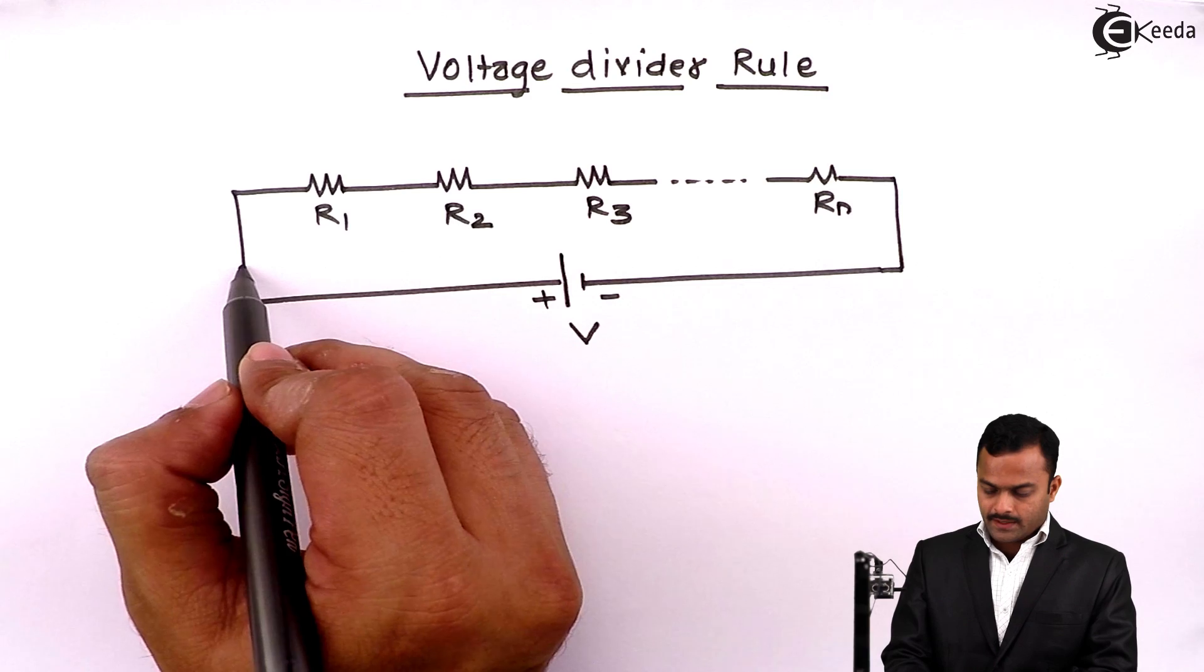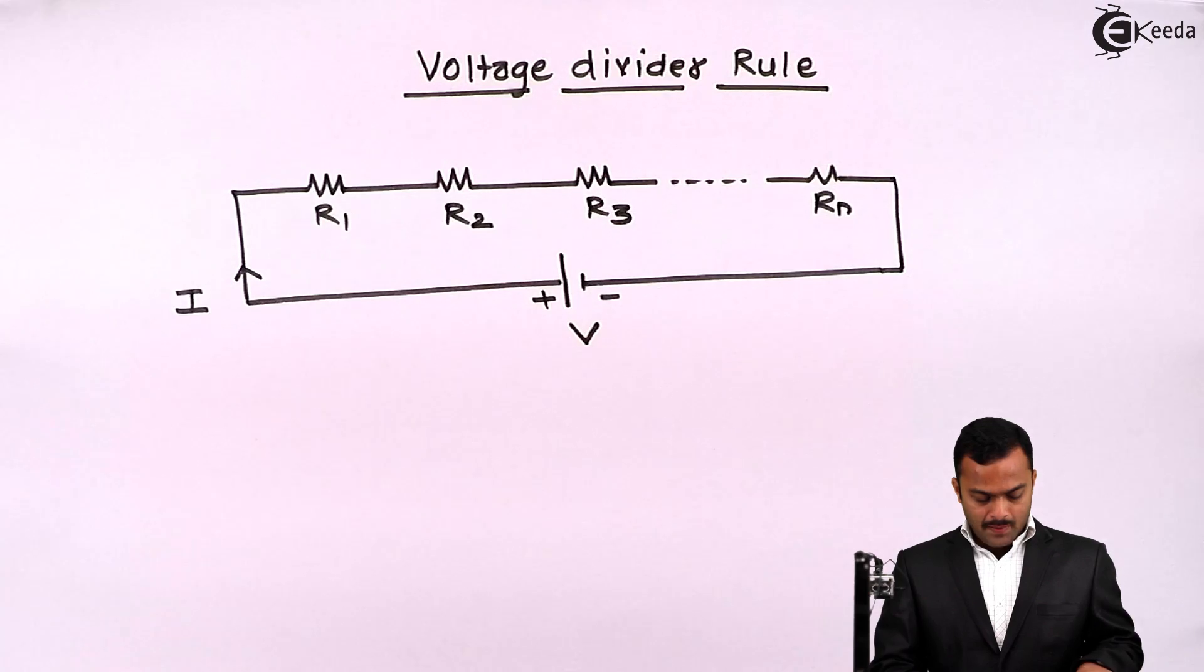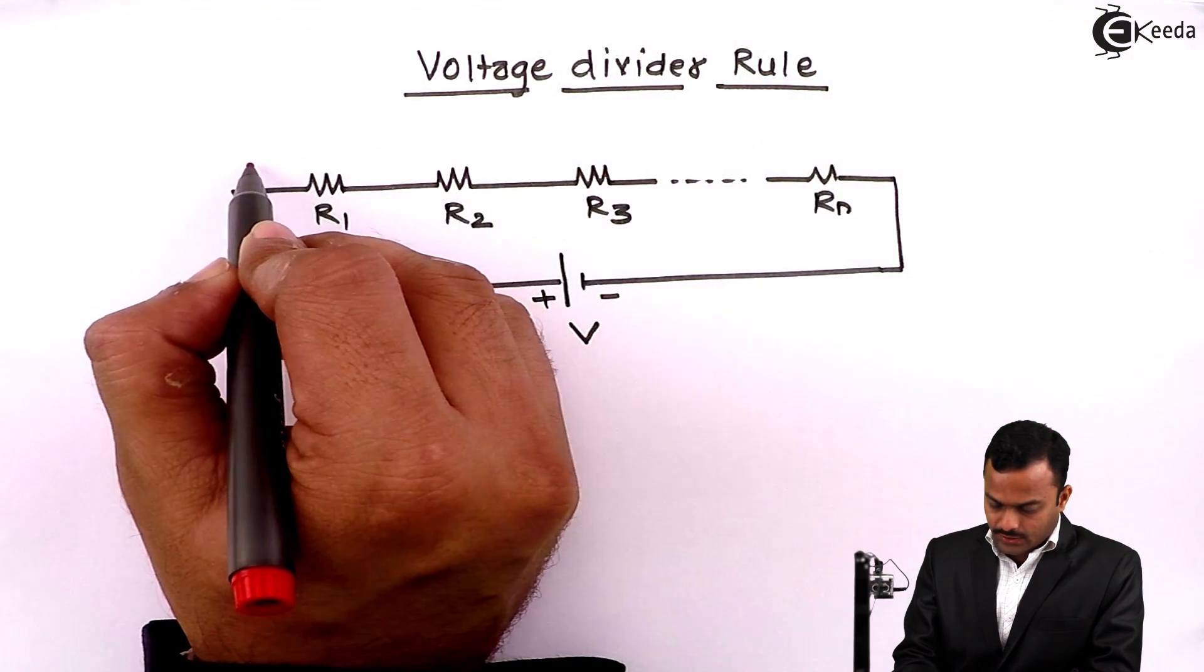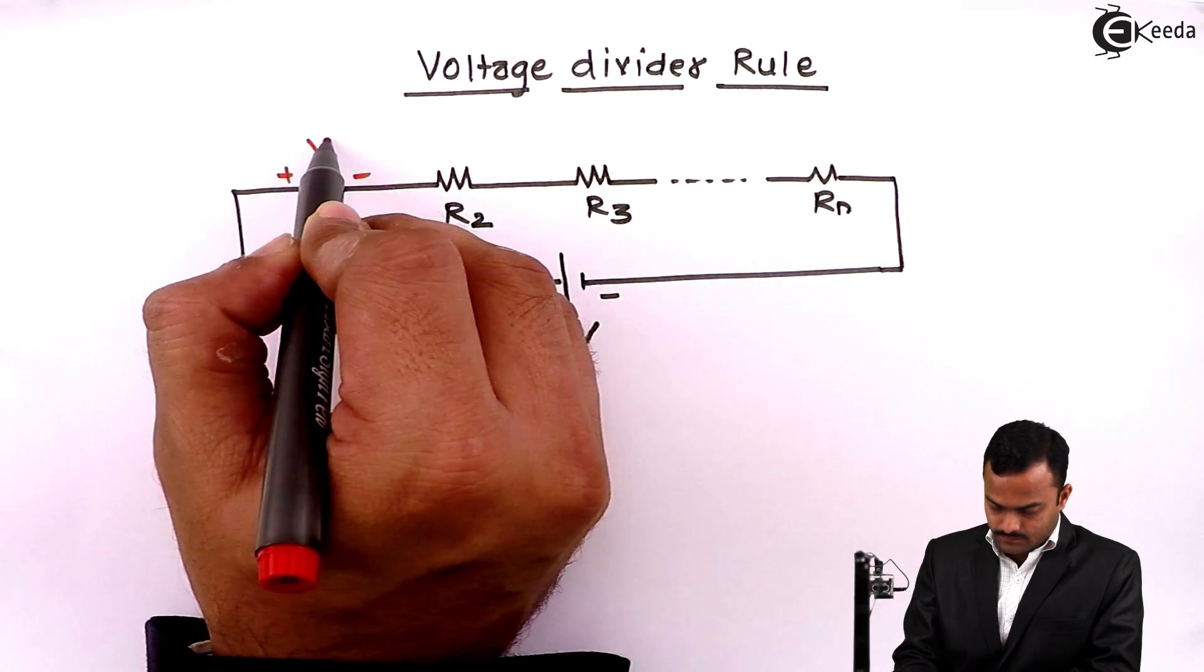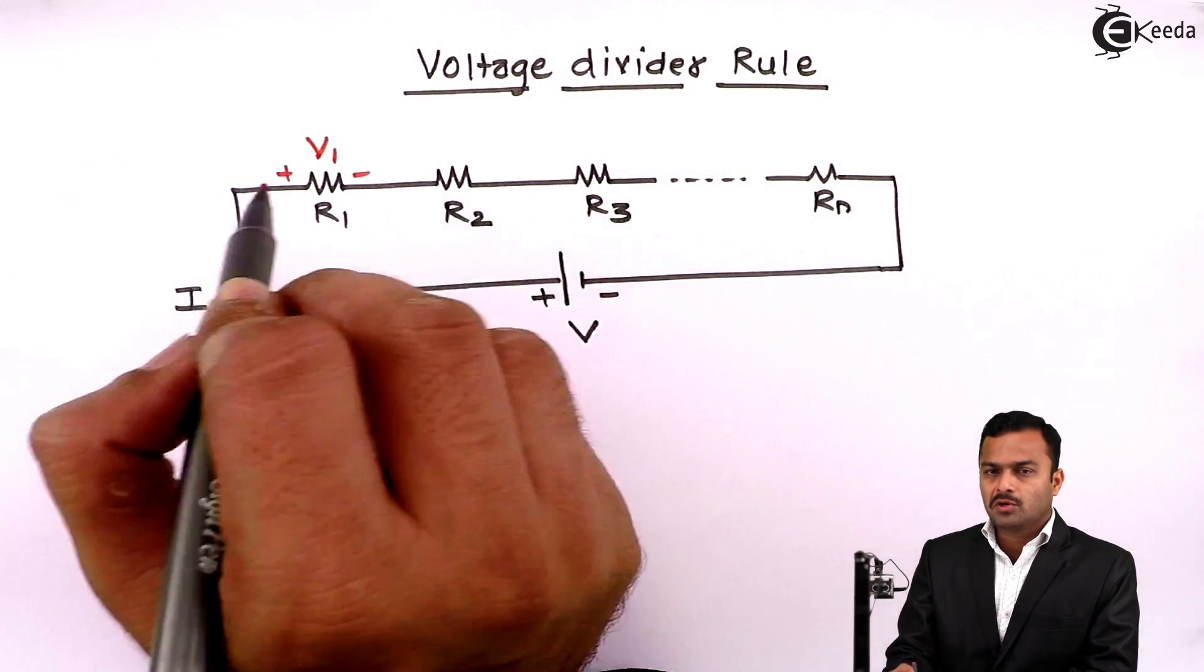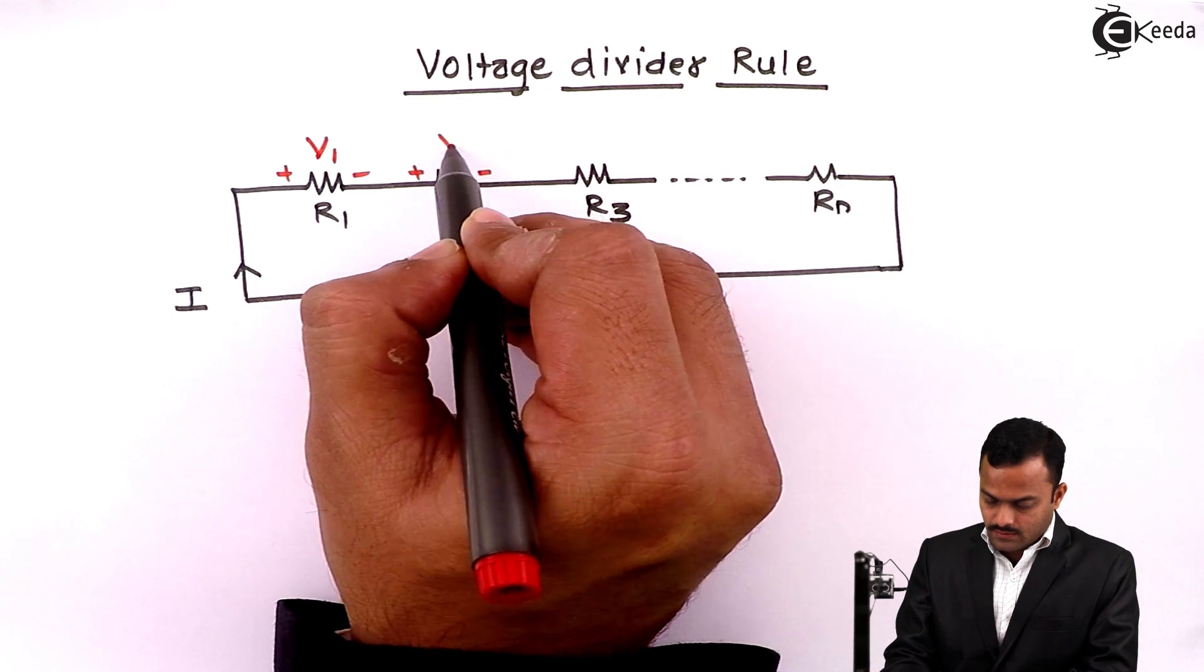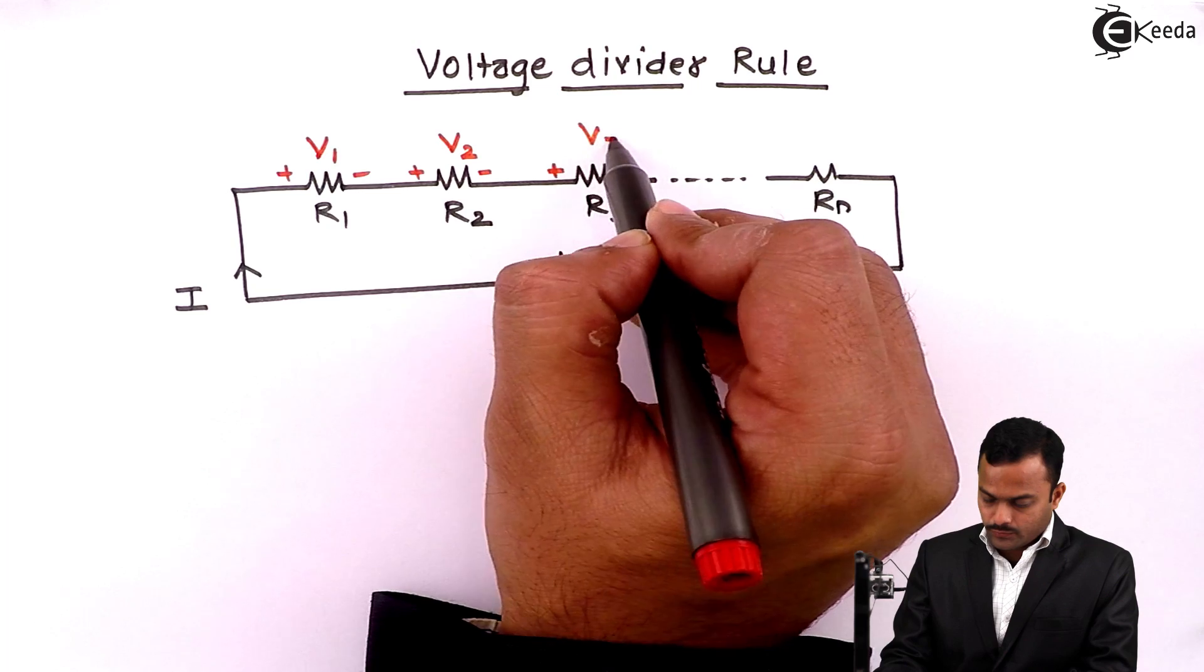So there will be a current passing through this, that will be I. I will pass through a resistance R1, develop a voltage across it that is V1. Same current I is passing through R2 because it is a series circuit, it will develop a voltage V2 and so on up to Vn.